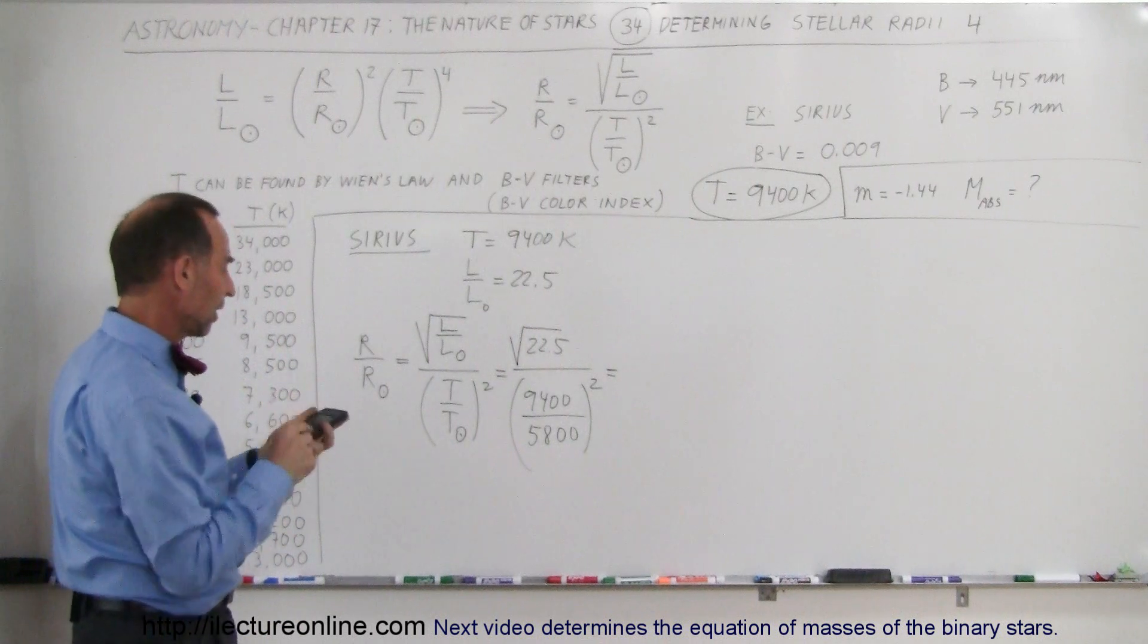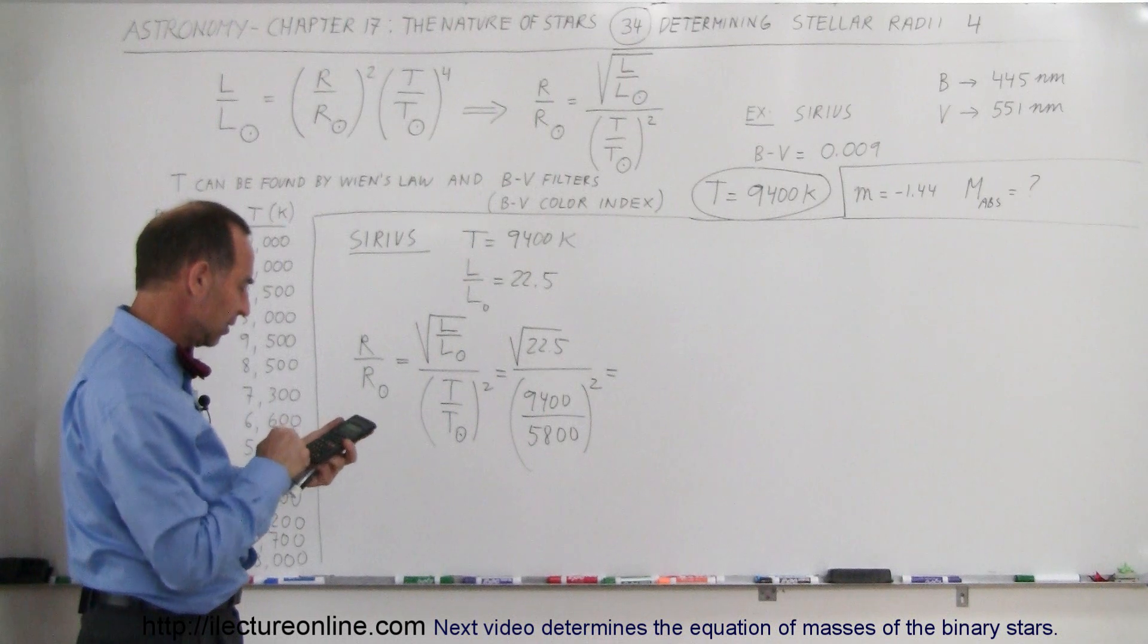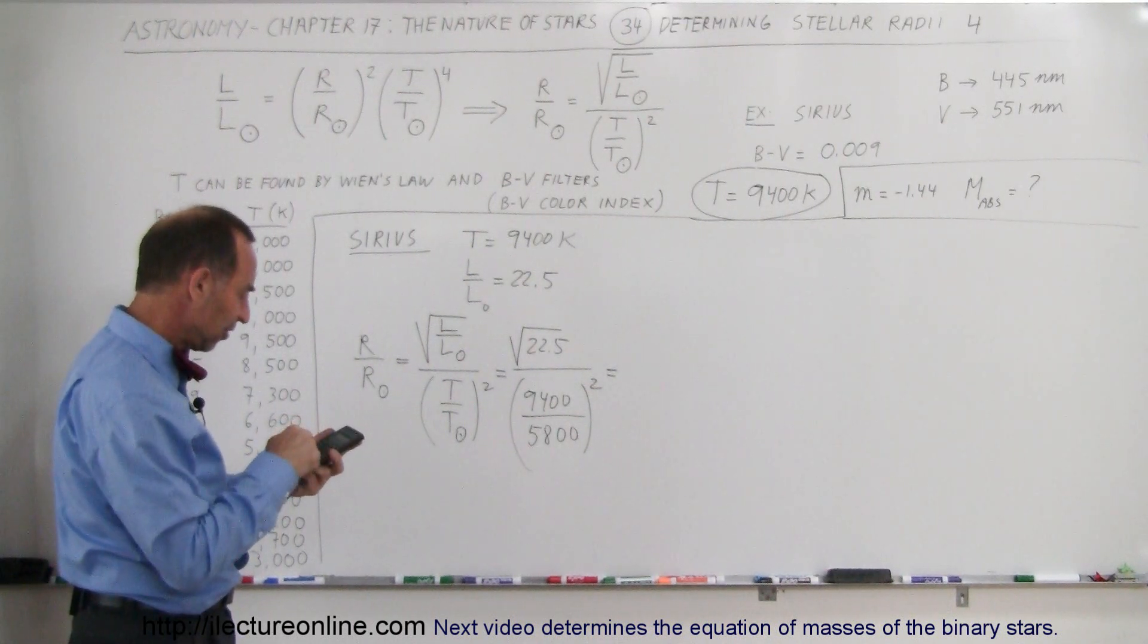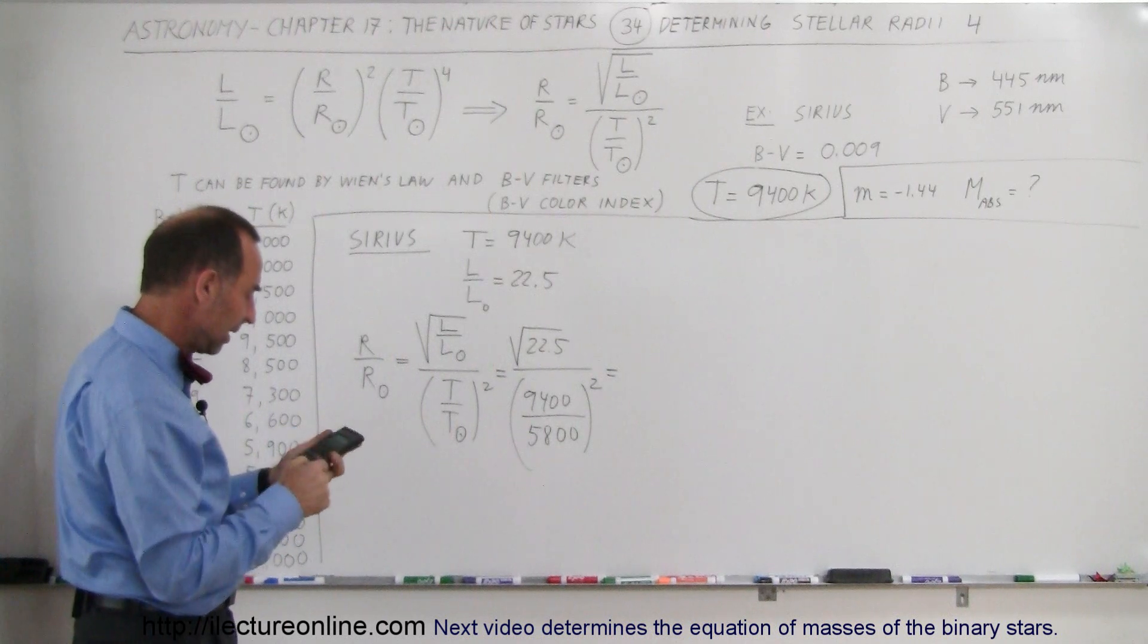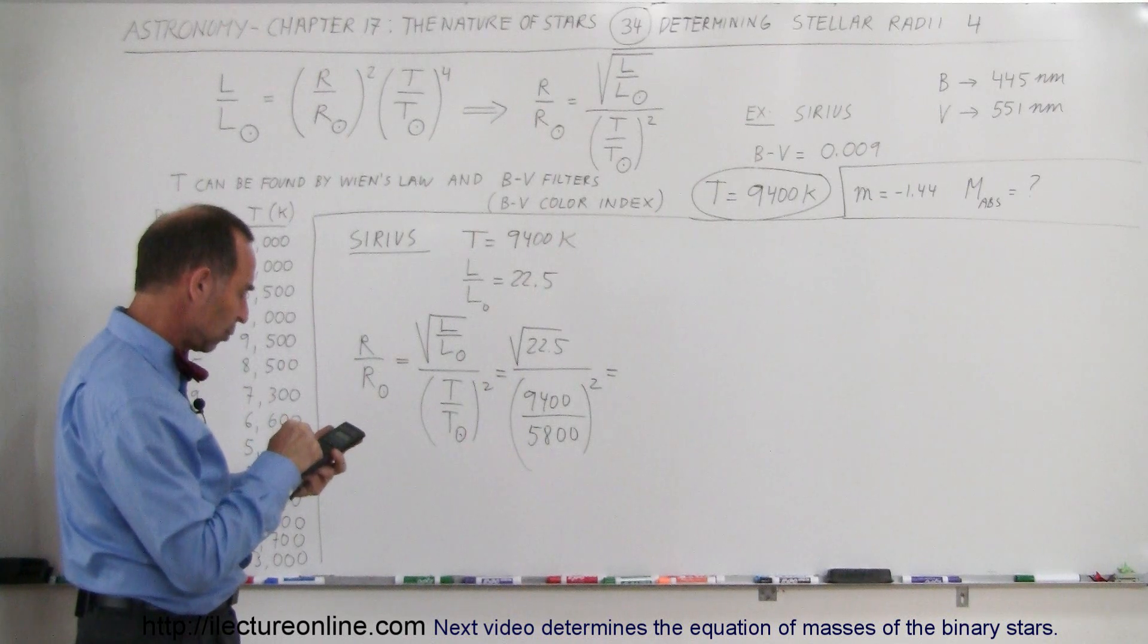All right, so starting out with the denominator we have 9400 divided by 5800, and we square that, and then we take the inverse of that because it's in the denominator, and we multiply that times 22.5, take the square root of that.